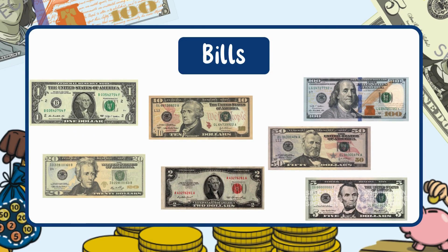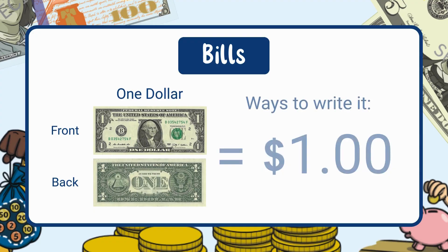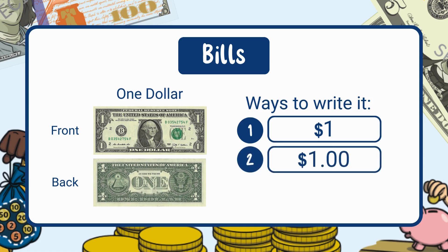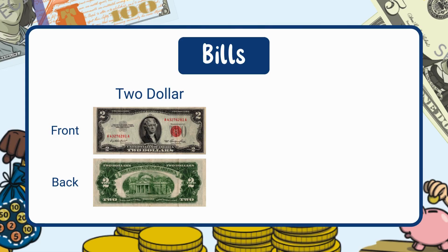Now that we've learned about coins, let's talk about paper money. Just like coins, each dollar bill has a value — some are worth one dollar, while others are worth 5, 10, or even more. This is a one dollar bill. It's worth one dollar. Ways to write it: standard form, one dollar; decimal form, one dollar; written form, one dollar.